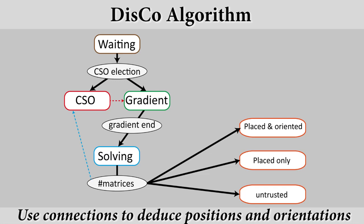DISCO is a fully distributed algorithm using three stages. The first step is the election of the CSO using a unique ID stored in the robots. A gradient message is flooded from the CSO to define the first list of possible positions and orientations, which are stored in a list of transformation matrices.